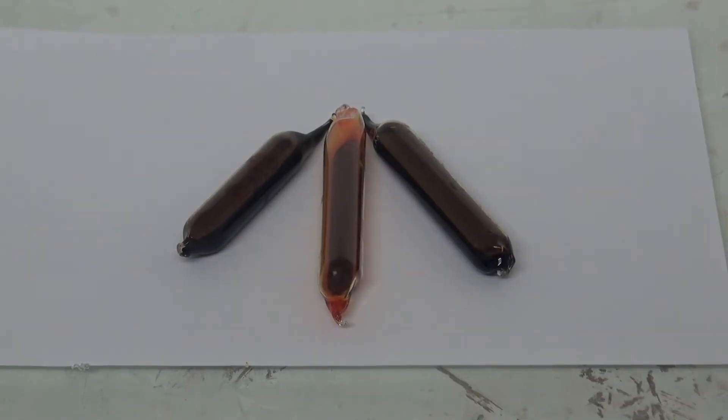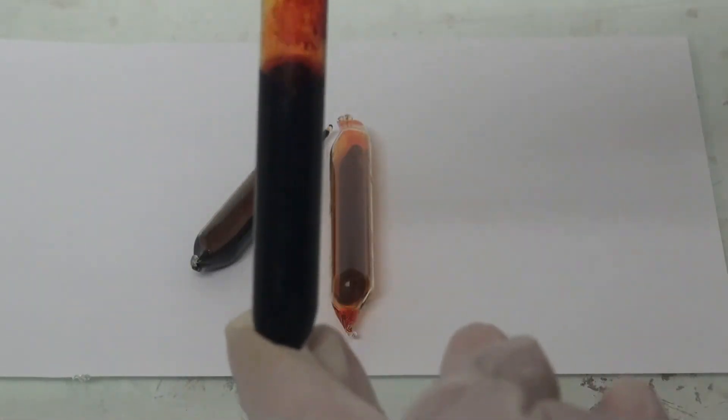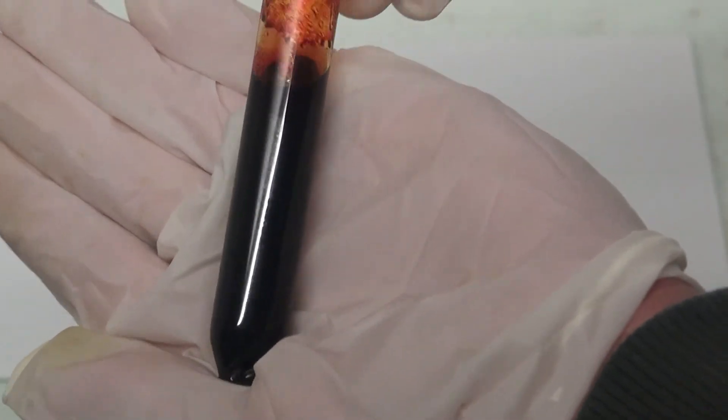And now here we have it, 3 beautiful ampoules filled with elemental bromine. The bromine is still wet, but that's a problem I will solve when I use it.